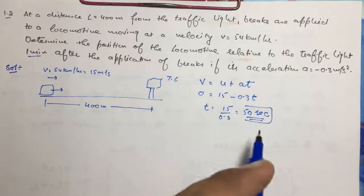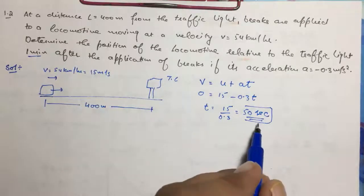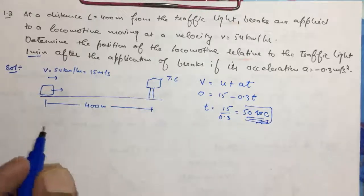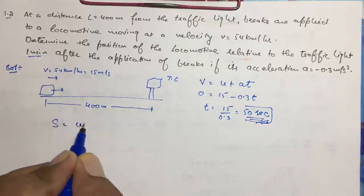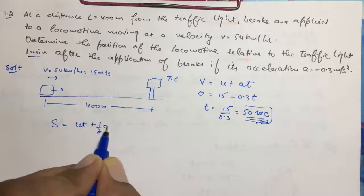So let's check what is the distance moved by the locomotive in 50 seconds. So this was the trick actually. S = UT + ½AT², this will be the equation.